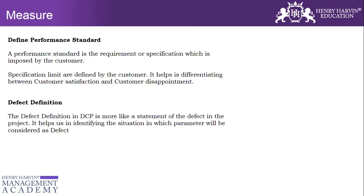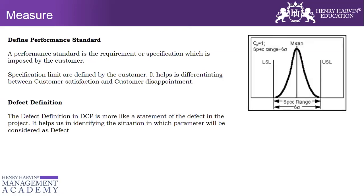In the performance standard, you can see the lower specification limit and the upper specification limit — these are customer requirements. The mean is the central value. In this particular case, the performance is within the customer specification — it is not beyond the lower specification limit or beyond the upper specification limit. This represents a good product or feature by design that will meet customer demands and expectations.